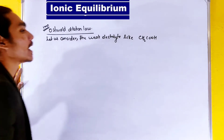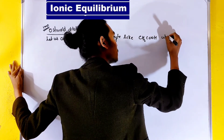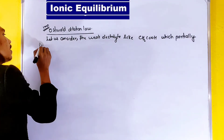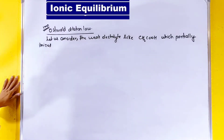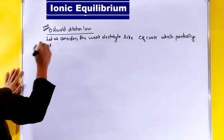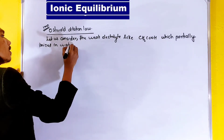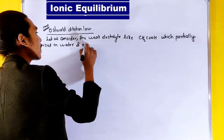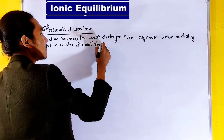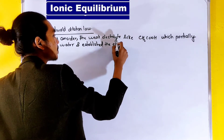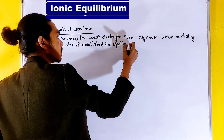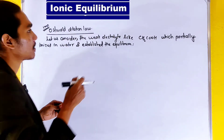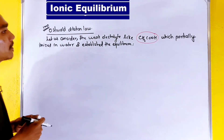Let us consider the weak electrolyte and establish the equilibrium. So we can write the form for CH₃COOH.